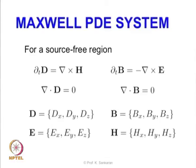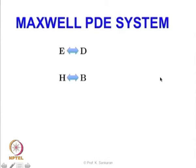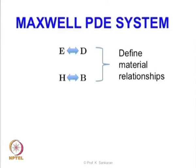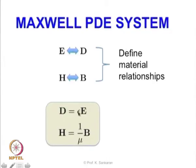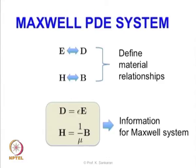So far I have not used any material components. By material components I mean the permittivity and permeability, and these come into play when relating B to H, or D to E. That relationship must be defined before doing any mathematical modeling. The relationship between D and E and between B and H is given by the material relationships — in other words, permittivity epsilon and permeability mu.